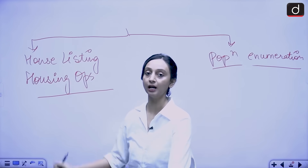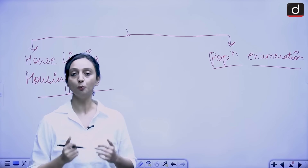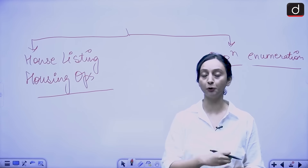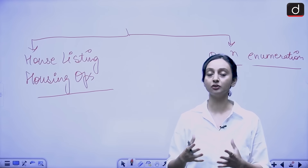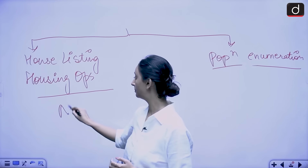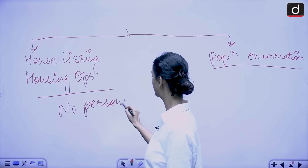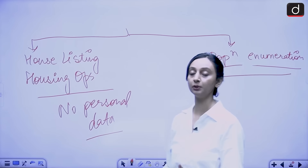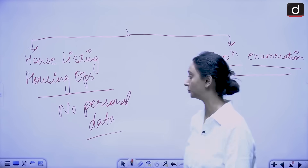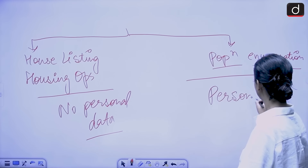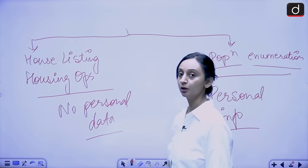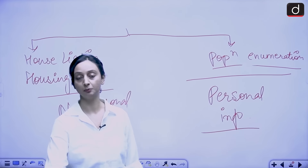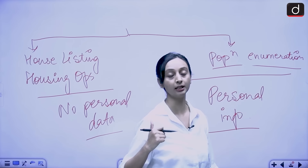Under the house listing and housing operations phase, no personal information is going to be included. Only the number of households will be counted, these households will be geotagged, mapped to their respective blocks, and the status of basic amenities in these households will be checked — no personal data. In the population enumeration phase, which is the second phase, this is where the actual population is counted and all personal information is collected.